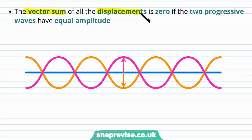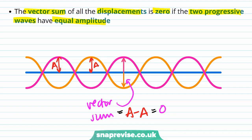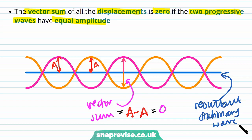The vector sum of all displacements is zero if the two progressive waves have equal amplitude. If both waves have amplitude a, then the vector sum is a minus a, because the amplitudes are in opposite directions. This equals zero, so our resultant stationary wave is just a straight line — zero displacement throughout the whole stationary wave.